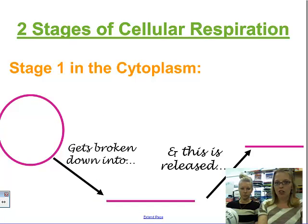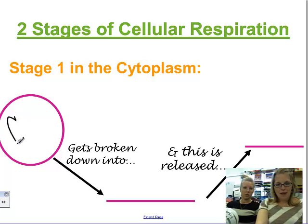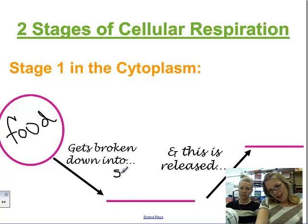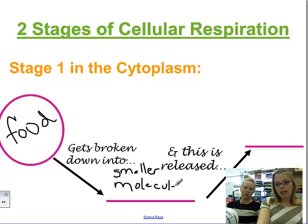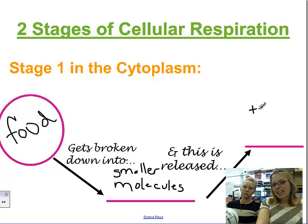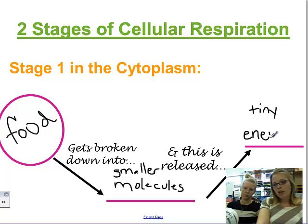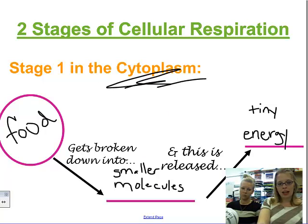So here are the two stages of respiration — this is where you get into the advanced concepts. Food, glucose, sugar — those are all the same thing. In Stage One, glucose gets broken down into smaller molecules in the cytoplasm, and a tiny amount of energy is released. This isn't the energy you really need, but you do get a little energy here. In high school you'll have to memorize all these smaller molecules; in middle school we just want you to recognize there are a couple of steps and it's not just magic.